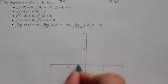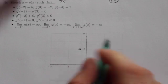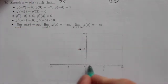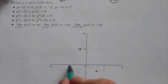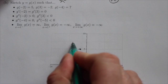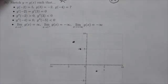So negative 2, 5, that's about right there. 3, negative 2, so 1, 2, 3 down here, negative 2, about right there. And negative 4, positive 7, so that's going to be up about there based on the grid that I'm seeing here.